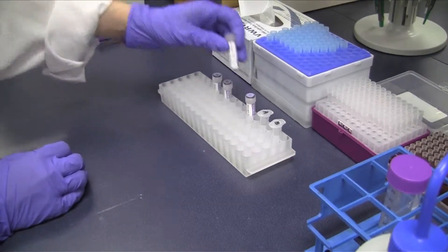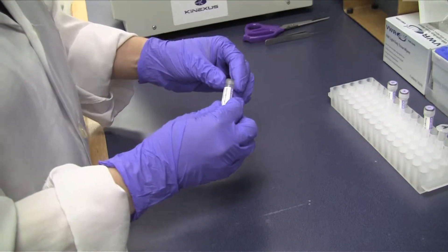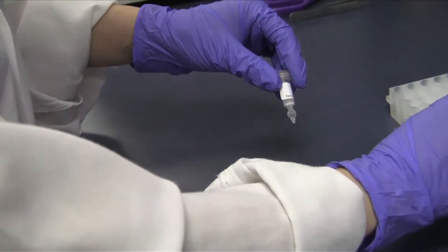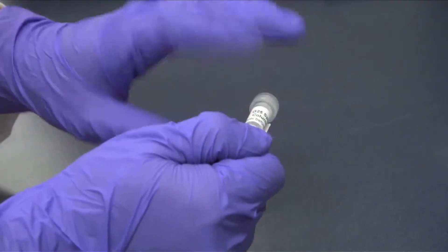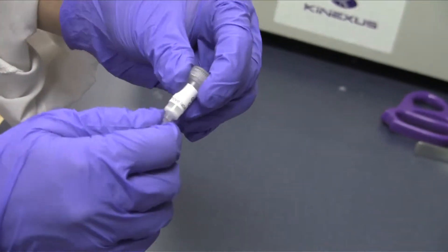Label the micro spin G25 columns part CAMI with corresponding sample IDs. Re-suspend resins in the columns by finger tapping. Loosen the cap and snap off the bottom closure.